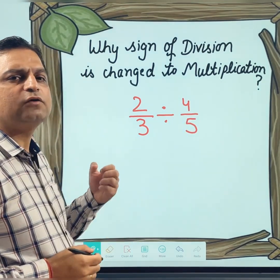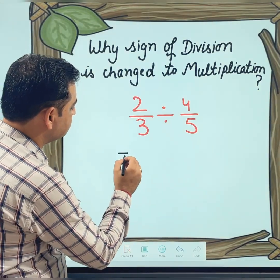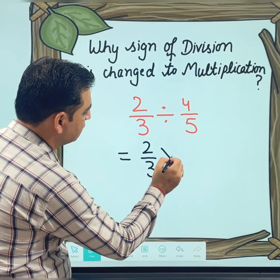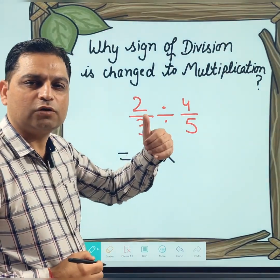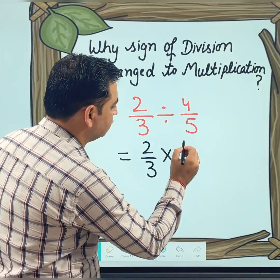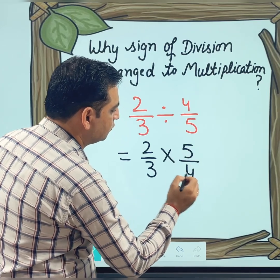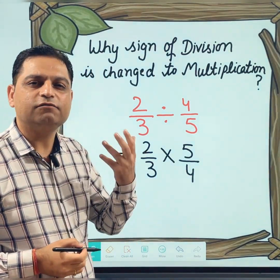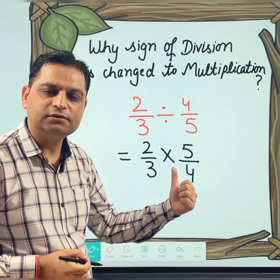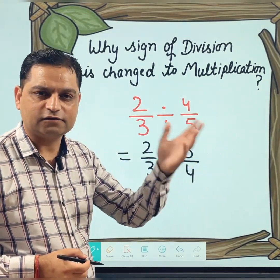Usually the next calculation step what we do — we change the sign of division to multiplication and do the reciprocal of the next fraction, which is 4 upon 5. That means we write it as 5 upon 4. Division changes to multiplication and we take the reciprocal of the next term.